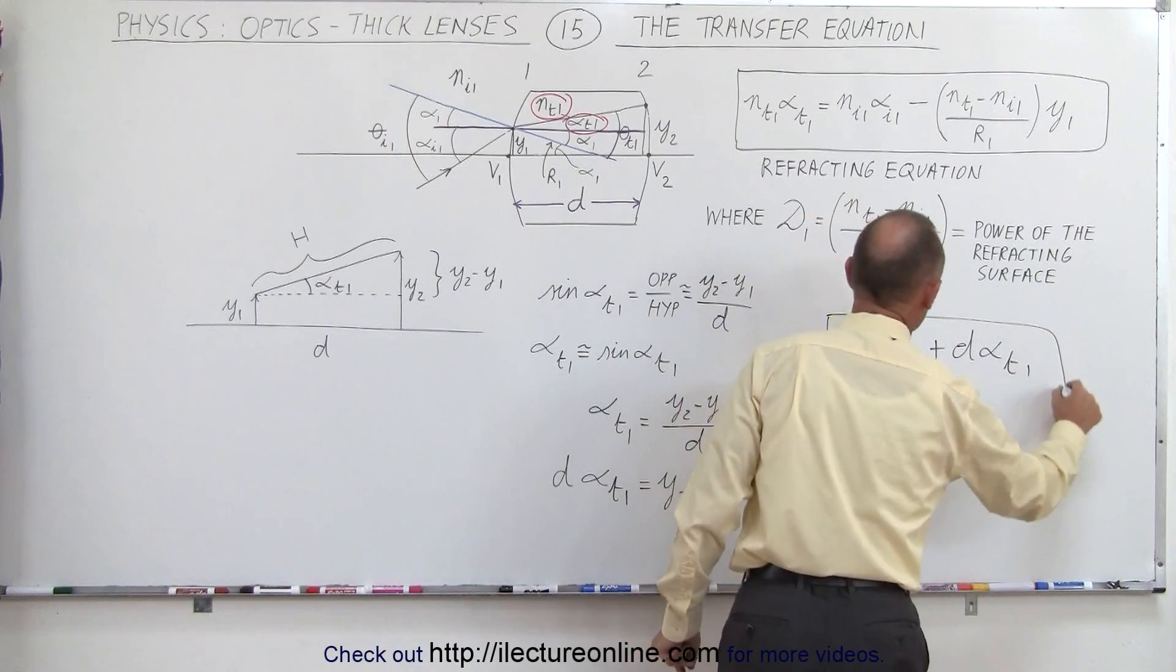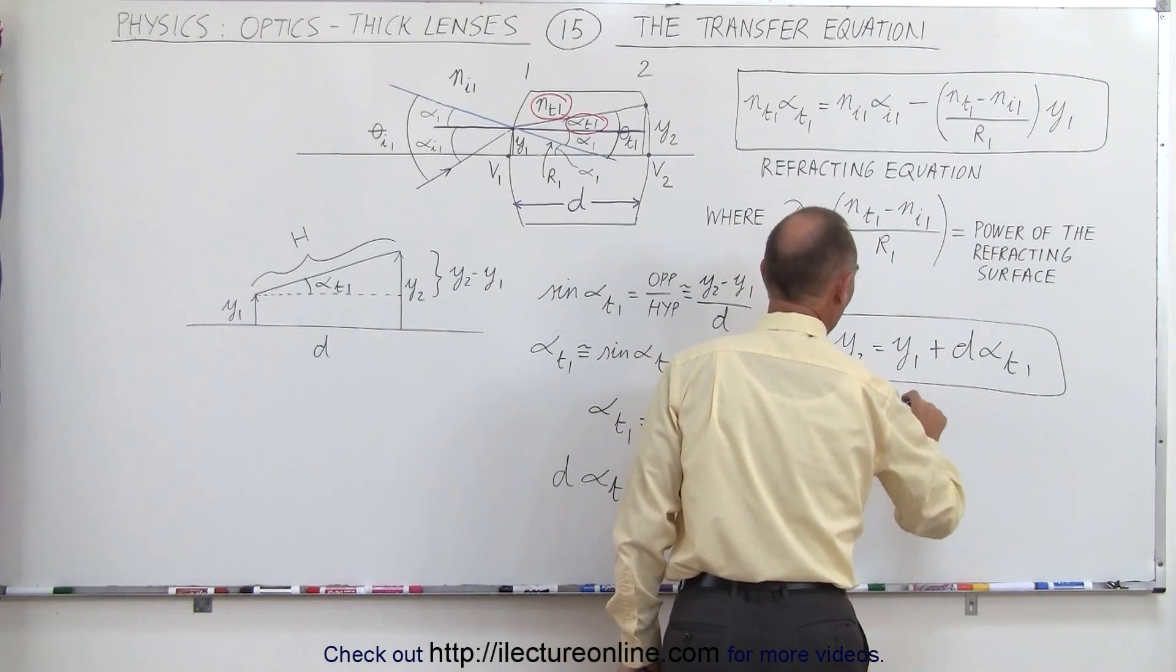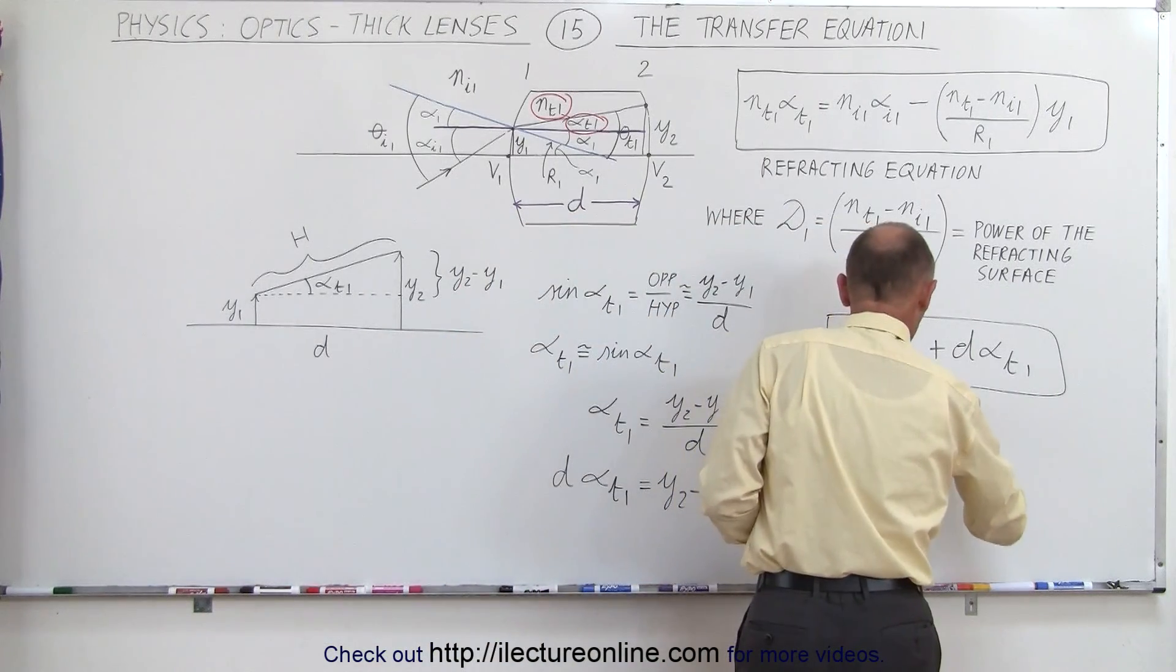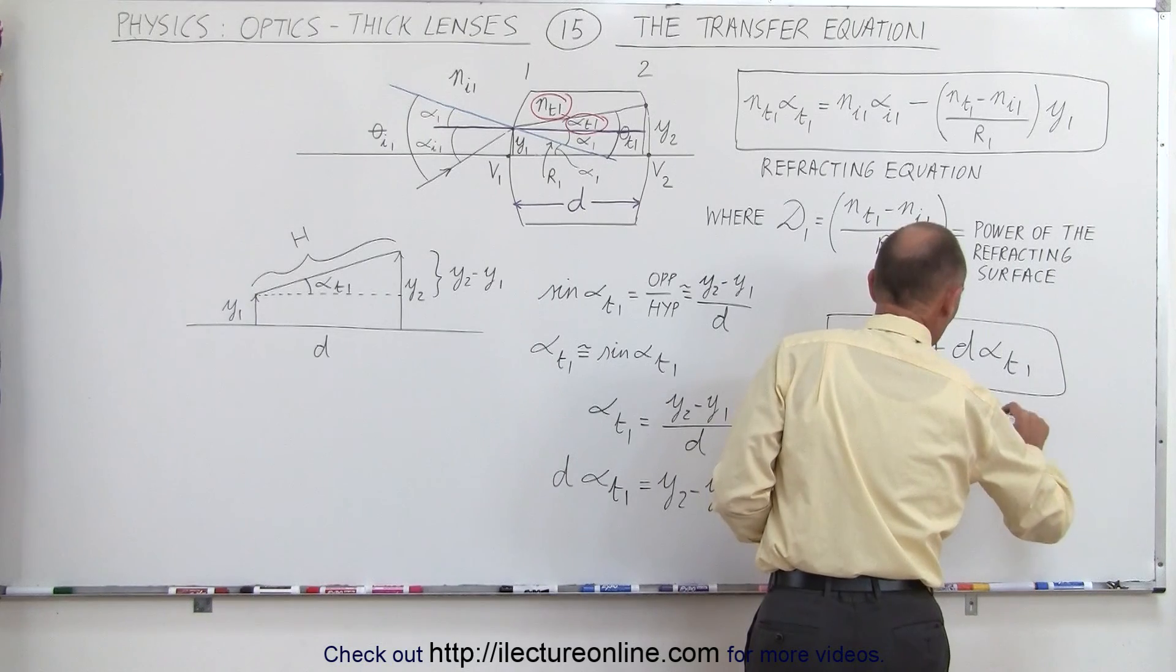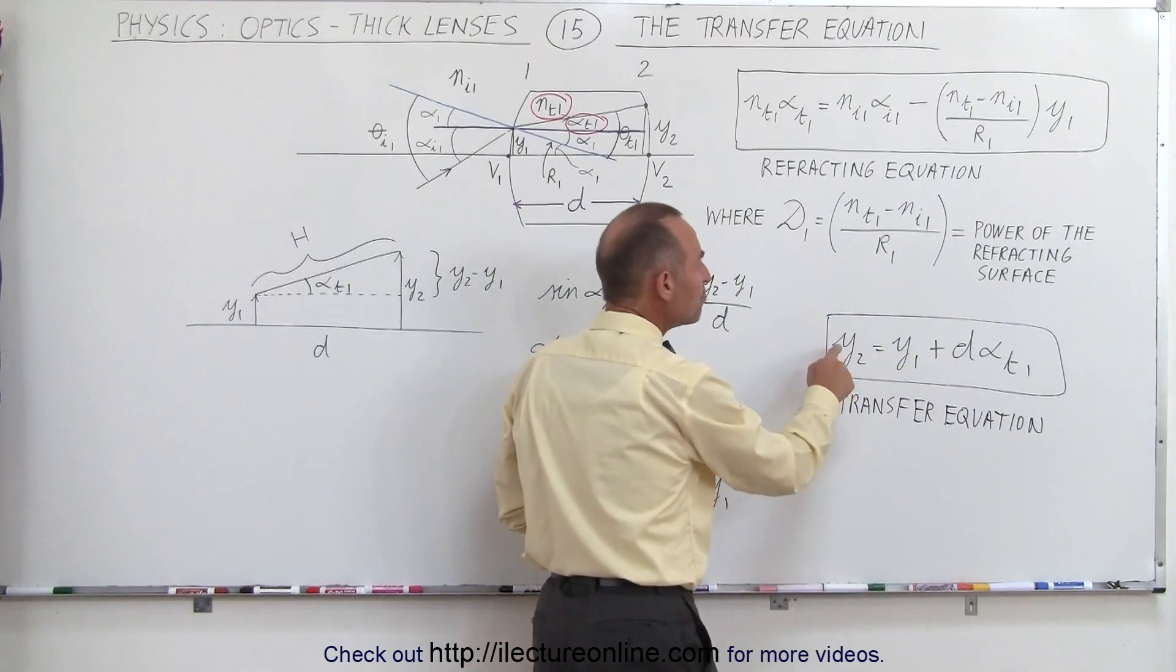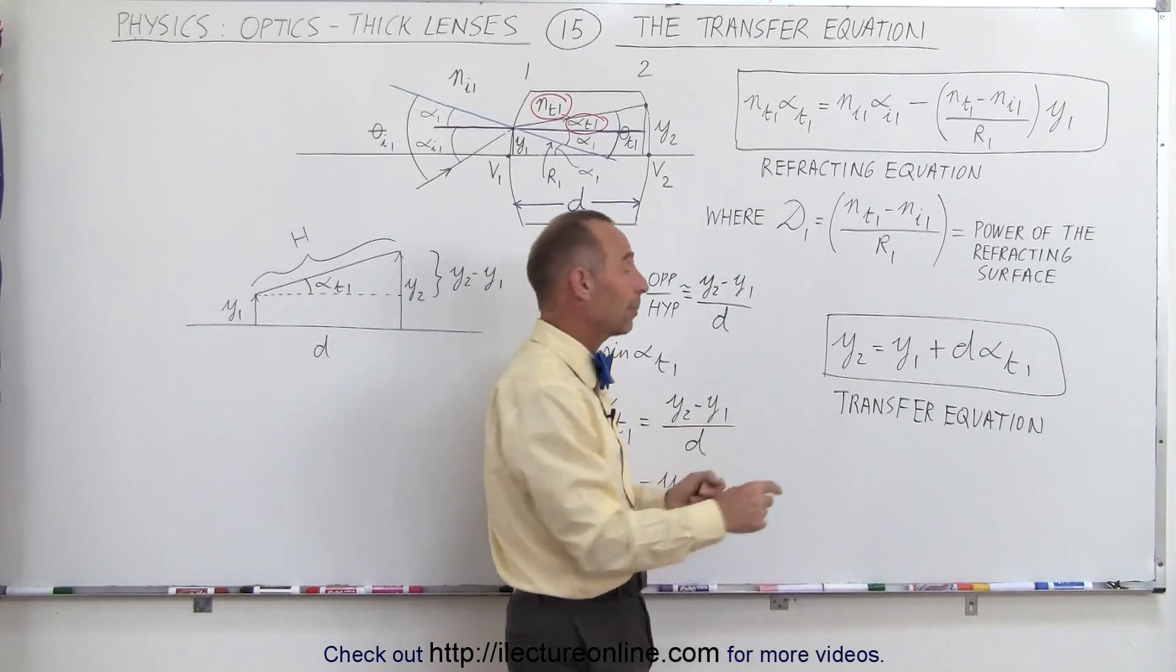And this equation is known as the transfer equation, which describes how the ray crosses the thick lens. So this is called the transfer equation. And notice the way it's set up is that it will tell you where it will emerge the lens on the back side, the height above or below the optical axis,